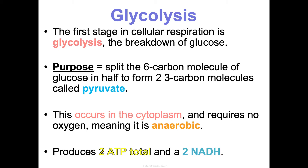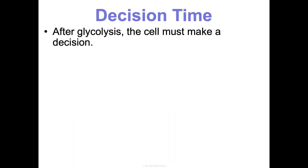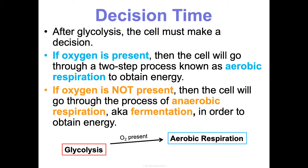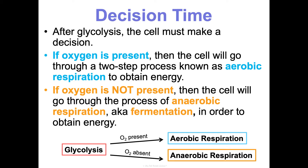There are other energy-carrying molecules besides ATP. ATP is just the main currency for the cell, but there are others — we talked about NADPH in photosynthesis, and here we'll talk about NADH and FADH2. After glycolysis, the cell makes a decision: if it has oxygen, it will go through aerobic respiration. If it does not have oxygen, it will go through anaerobic respiration, also known as fermentation, to get energy.